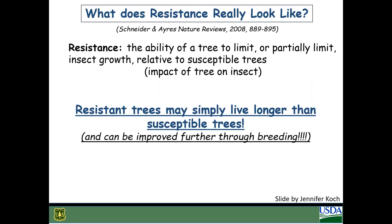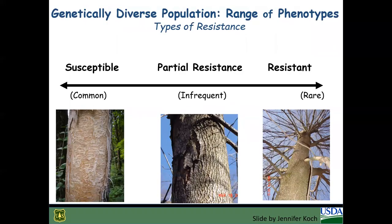So what does resistance look like? These aren't trees that are completely bulletproof and unable to be infested. Resistance is defined as the ability of a tree to limit or partially limit insect growth relative to susceptible trees. They may eventually die, or they may simply live much longer than susceptible trees — however, they can be improved further through breeding. On the landscape, there are many susceptible trees, some that are slightly less susceptible, and in the center there's a picture of a tree that has had emerald ash borer galleries but has healed over those galleries and survived — with cracks in the bark that may indicate partial resistance. Very rarely, you may encounter completely resistant trees that do not have any damage from emerald ash borer.